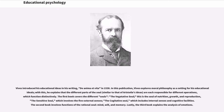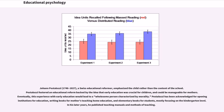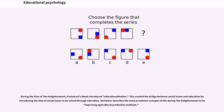Johann Pestalozzi (1746–1827), a Swiss educational reformer, emphasized the child rather than the content of the school. He fostered an educational reform backed by the idea that early education was crucial for children and could be manageable for mothers, and that this experience would lead to a wholesome person characterized by morality. Pestalozzi has been acknowledged for opening institutions for education, writing books for mothers on home education, and elementary books for students mostly focusing on the kindergarten level.